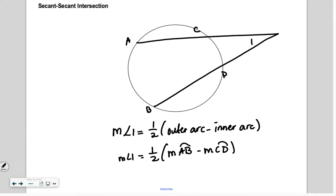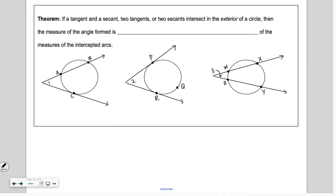So let's try some of these problems. So it says if a tangent and secant, two tangents, or two secants intersect on the exterior of a circle, then the measure of the angle formed is half of the difference of the measures of the intercepted arcs. And it's always that outer minus center.